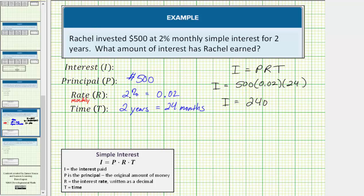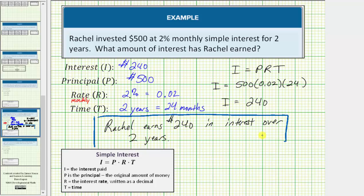Which means Raquel earns $240 in interest over the two years. I hope you found this helpful.